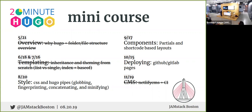This is the fourth part of our Hugo mini-course. We did an overview the first month and two months on templating because it ended up being a bigger section than one month could cover. Now we're moving on to the style section, talking about adding CSS to your app and how Hugo Pipes works at a high level. The next few months we'll cover components and deploying.